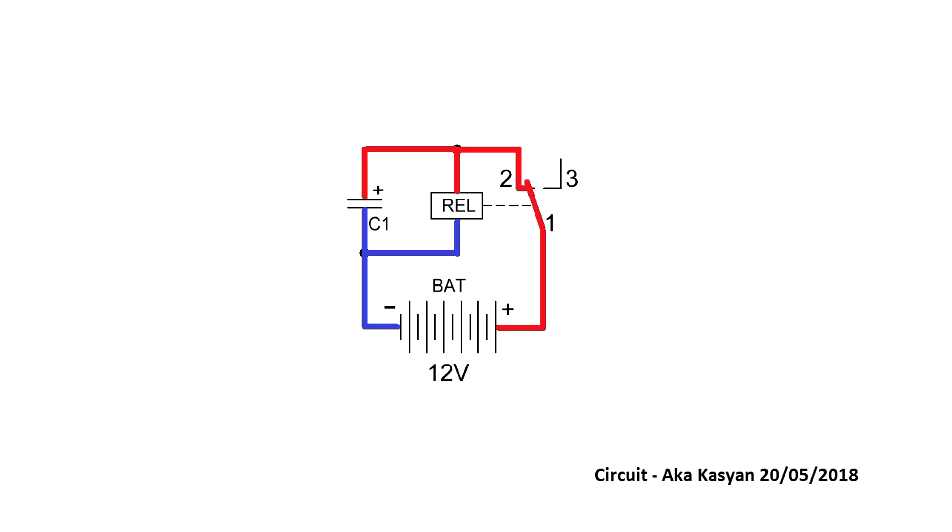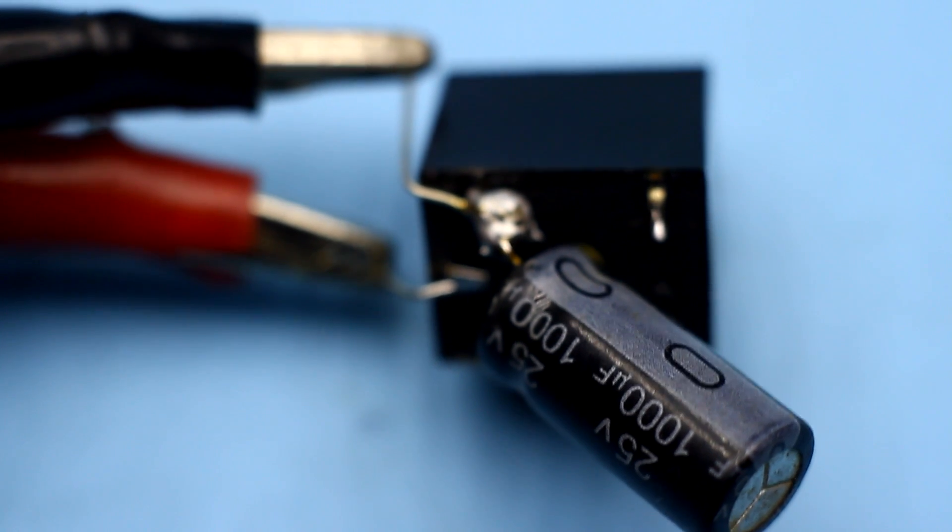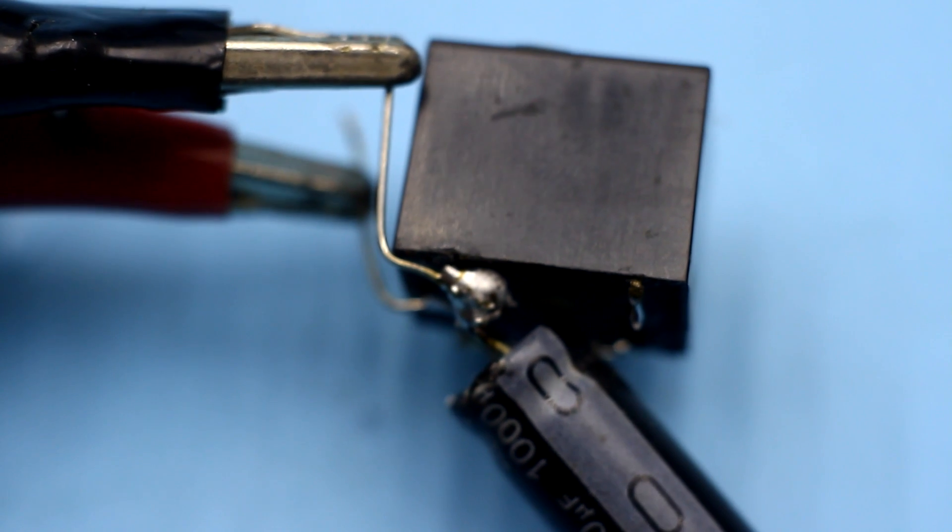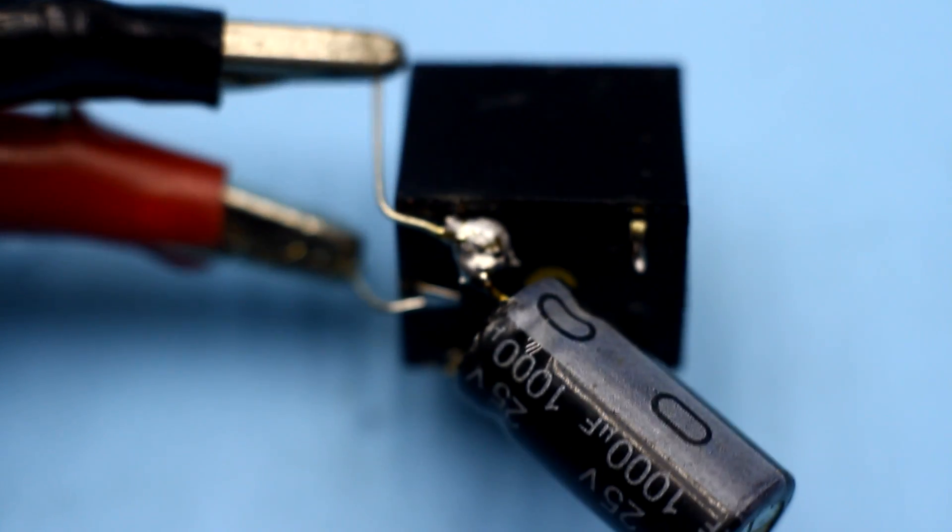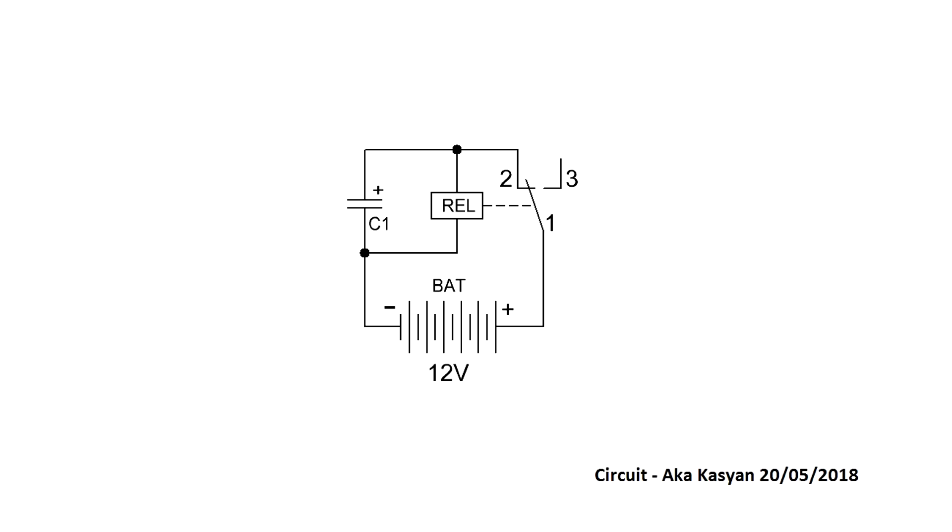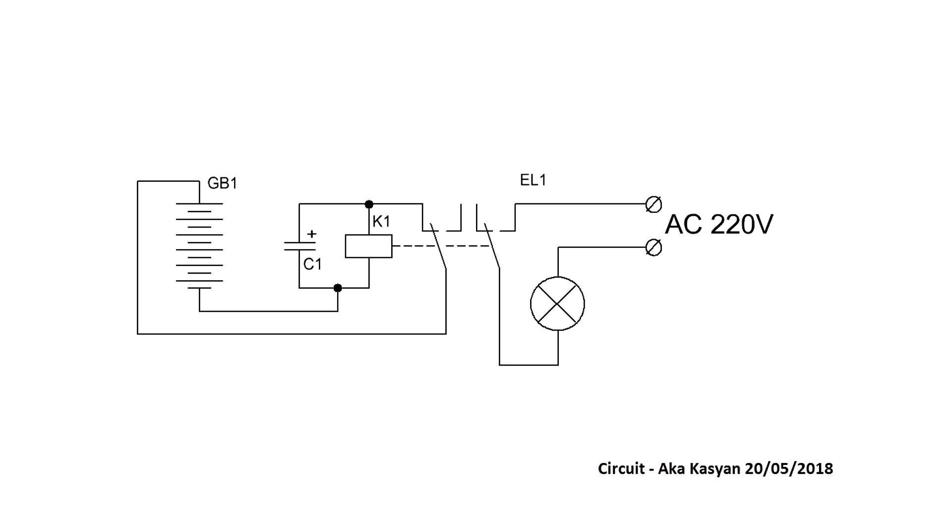The interval of turn on and off depends solely on the capacitor capacitance. The larger the capacitance, the longer the solenoid will hold the contacts and vice versa. There are several ways to connect the load to our vibrator. First, in the gap of one of the power wires. Second, use the third relay contact. Third, use a relay with two contact groups.